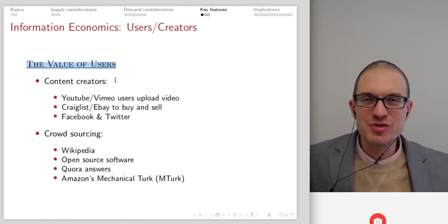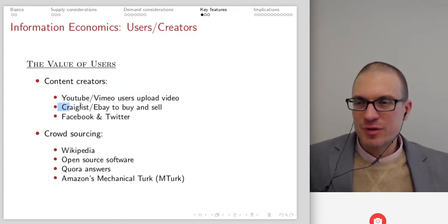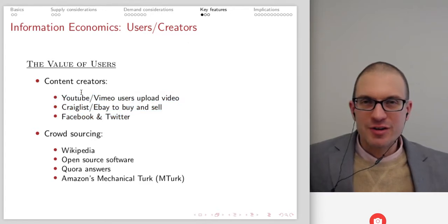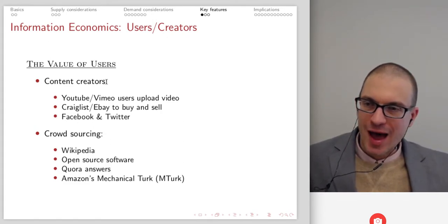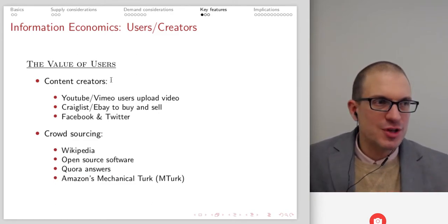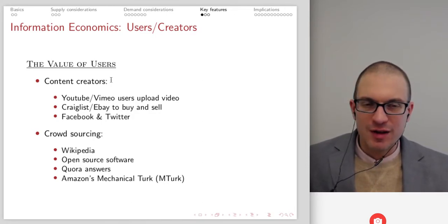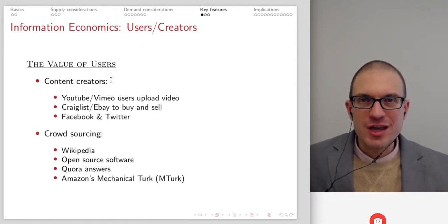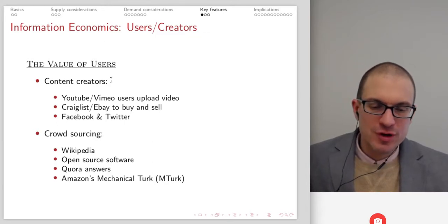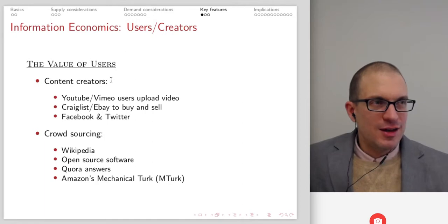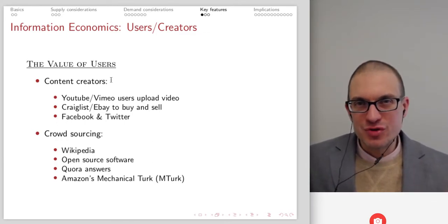There's increasing value of users — the users being and creating the product. Content creators through YouTube and Vimeo, Craigslist and eBay for buying and selling, Facebook and Twitter where content creators are important, creating the value that attracts others to the site. What's unique is someone on one side of the market is serving a role like a producer — in some cases bringing a physical product like Etsy or eBay, in other cases creating information others will consume. In either case, you're trying to make the value one collection of users brings as large as possible so it attracts consumers.